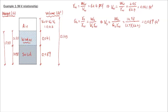We're looking for moisture content or water content. Water content is one of the six basic definitions: weight of water over weight of solids, expressed as a percentage. We have both values on the phase diagram, so plugging in the numbers gives a moisture content of 17%.